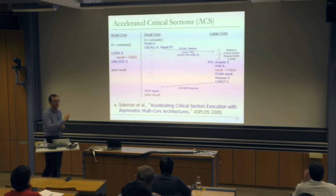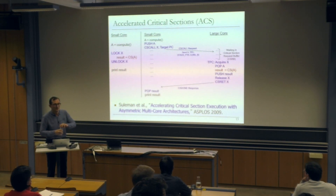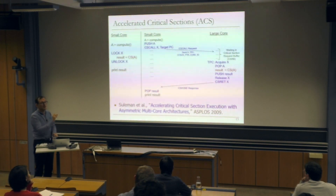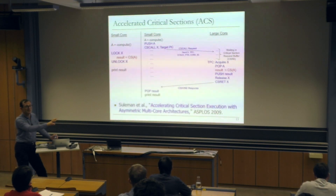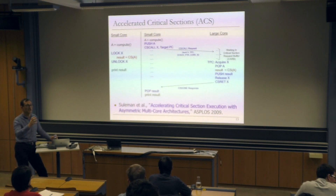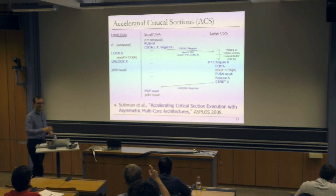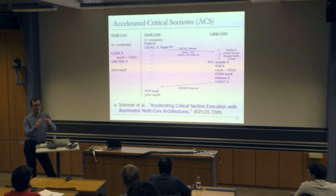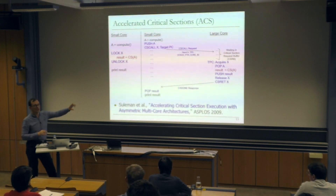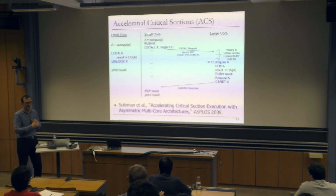If a critical section is very short and not contended, this will have overhead. But if it's short and contended, it may still benefit because all contended critical sections execute in the same place — shared data and shared locks stay in the large core rather than ping-ponging between caches. That's another benefit beyond just accelerating the critical section. If the critical section is very short there's not much benefit to accelerating it anyway, but keeping shared data and locks in one place could still help by reducing cache coherence traffic.